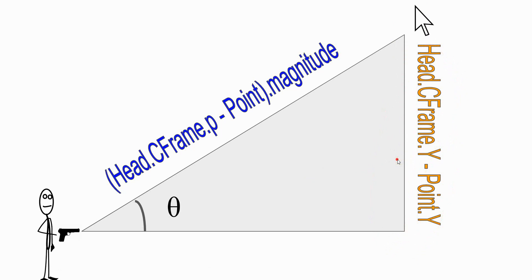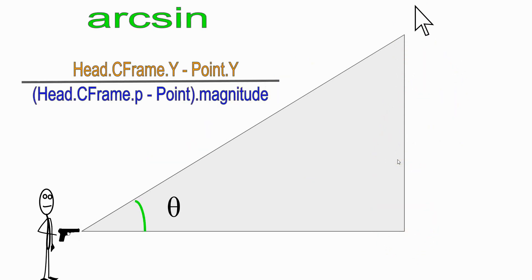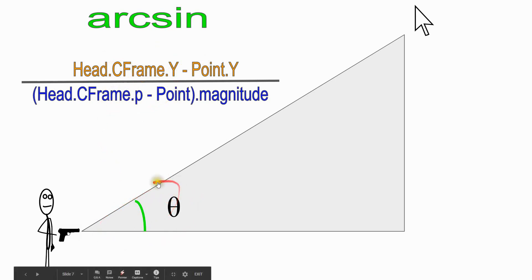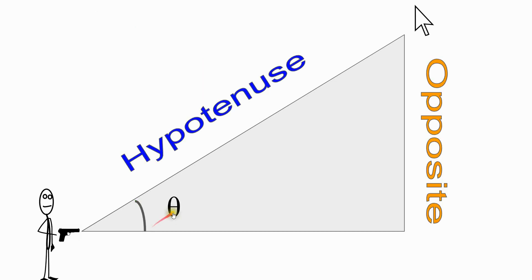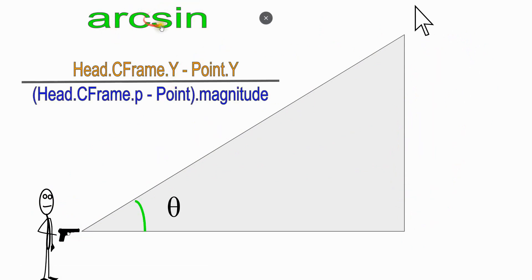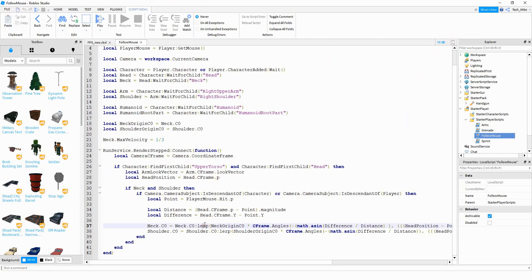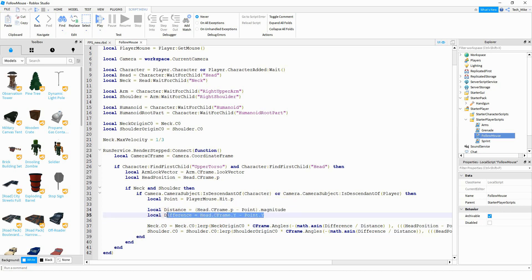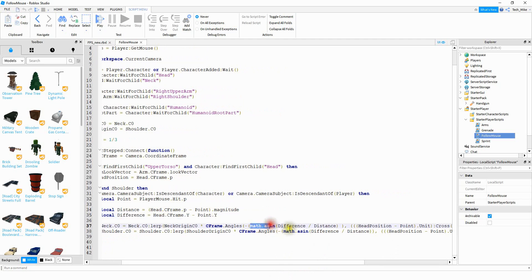Now that we have the length of the hypotenuse and the length of the opposite side, we can use the arc sine function to figure out what the angle is. For the arc sine function, if we give it the opposite side divided by the hypotenuse, it'll give us the angle we need. That's the basic idea for the math working in the script — there are some other parts more specific to Roblox and how the character works, but that's the core math. To recap: this line of code represents the hypotenuse, this line represents the opposite side, and down here we're using the arc sine function with the ratio of those two values to get the angle of rotation.